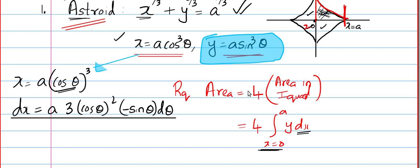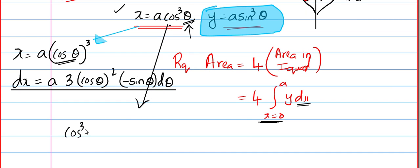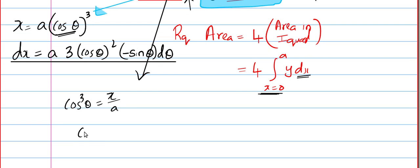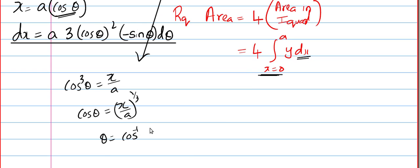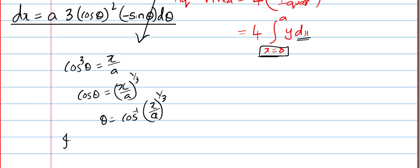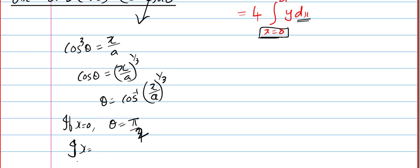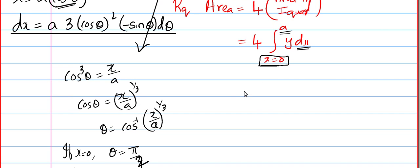Plugging in the limits: when x = 0, θ = cos⁻¹(0) = π/2. When x = a, θ = cos⁻¹(a/a) = cos⁻¹(1) = 0. So the limits in theta go from π/2 to 0.